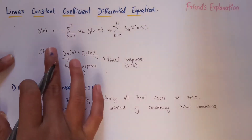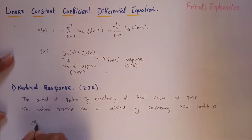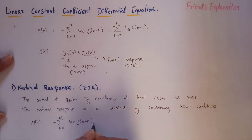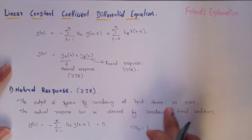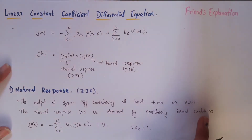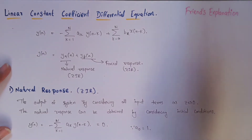From the equation, we can see that the first term is the natural response. So we write y(n) equals minus summation from k equal to one to N of a_k times y(n-k). Since the input terms are zero, we set the input part to zero. By considering initial condition a_0 equals one, we will solve this equation further.